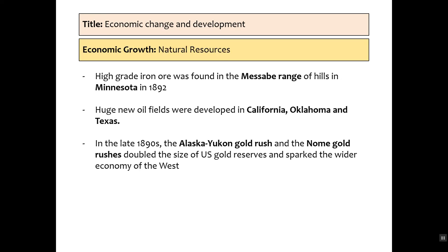There are massive amounts of natural resources in America: high-grade iron ore in Masabi, oil fields in California, Oklahoma, and Texas. In 1890, the Alaska Yukon Gold Rush and the Nome Gold Rush doubled the size of US gold reserves and created an economic stimulus in the West and other parts of America.